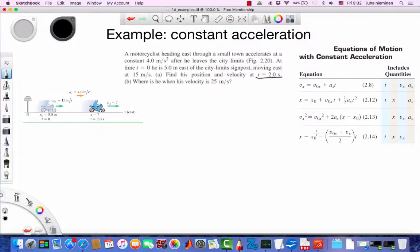Throughout this problem we can use this collection of formulas on the right-hand side. It's just a matter of picking the correct one. For finding his position, we look at the second row. Now the only question is, do we have all the necessary information to use that?